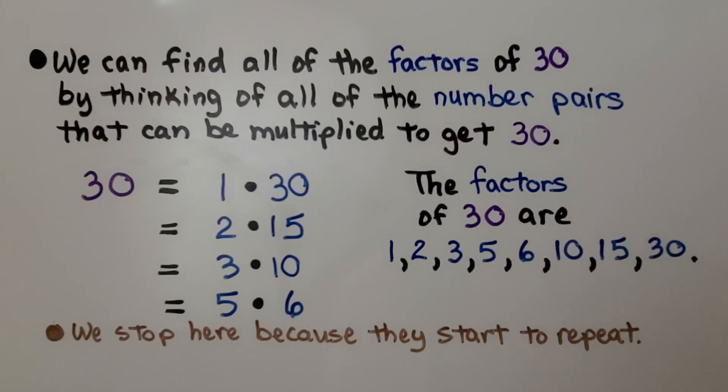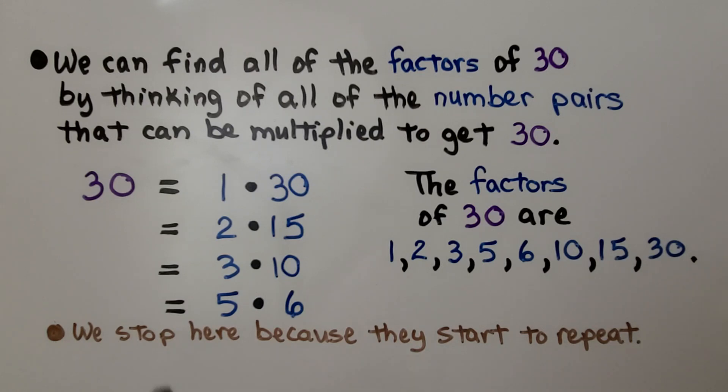We can find all the factors of 30 by thinking of all of the number pairs that can be multiplied to get 30. We can do 1 times 30, 2 times 15, 3 times 10, 5 times 6.